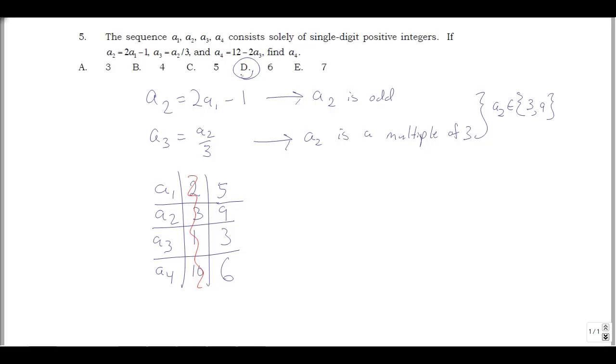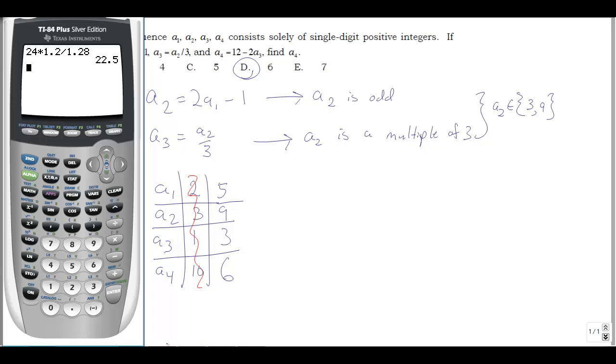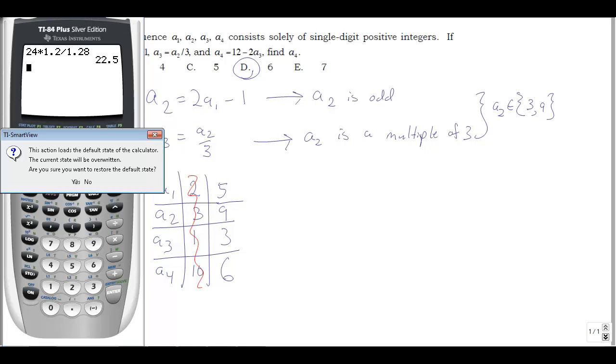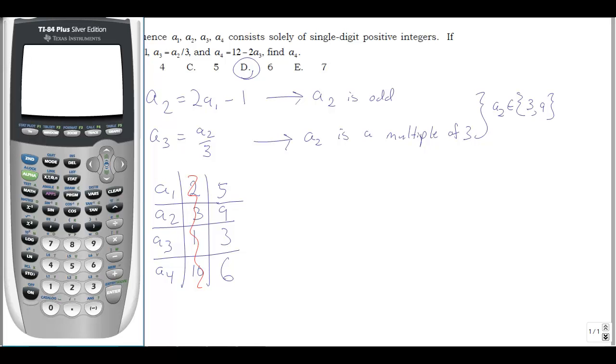Okay, so that's one way to do this. And that's maybe sort of straightforward, it's not so bad. But you can actually use your calculator to do this as well, because you have such a small number of possibilities. So one thing I would do, restore default state here, I'm just going to go to my list, so I hit the stat button, and then go to edit.